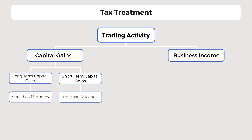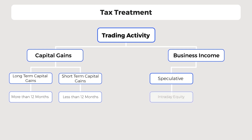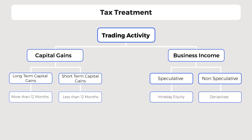Whereas intraday and derivatives trading are treated as business income. Business income can be further classified into speculative business income. Equity intraday trading is considered as speculative business income since it is done without taking actual delivery of equity shares. And non-speculative business income — since derivatives trading is used for hedging or taking delivery of the underlying asset, it is treated as non-speculative business income.